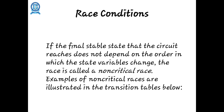Since the number of changes is one, there is no risk. If the final stable state of the circuit does not depend on the order in which the state variables change, then the race is called a non-critical race. Non-critical races occur when only one variable changes.